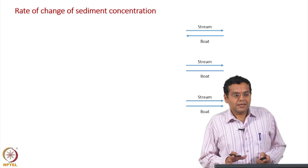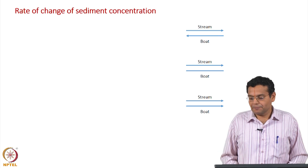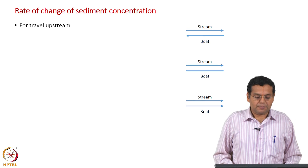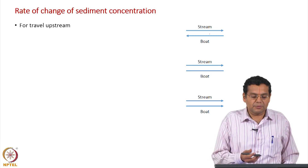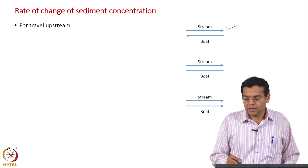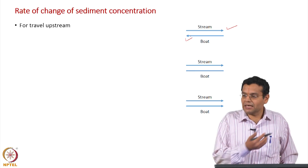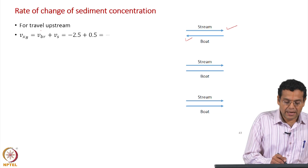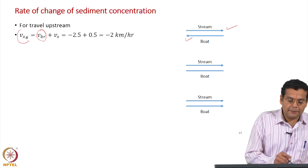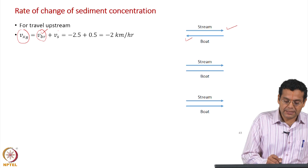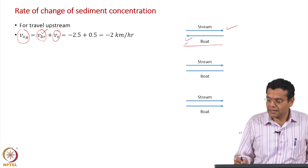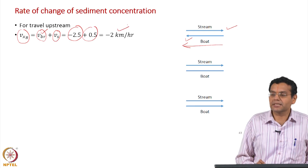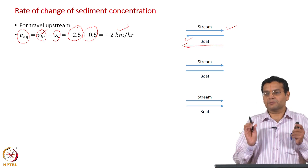Now let us answer the three cases. First, for travel upstream: upstream means the boat is travelling against the stream, so in the negative x direction. The velocity of the boat as observed by a stationary observer equals the velocity of the boat relative to the stream plus the stream velocity: −2.5 + 0.5 = −2 kilometers per hour. That is the velocity of the boat as observed from the shore.